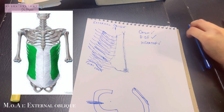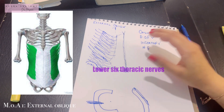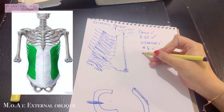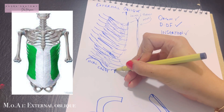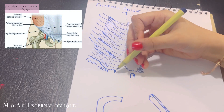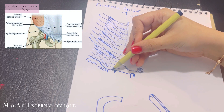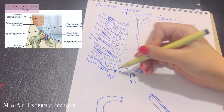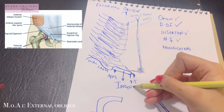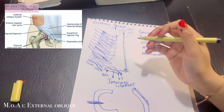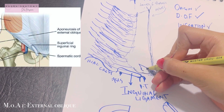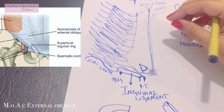The nerve supply of the external oblique is the lower six thoracic nerves. An important modification of this muscle is that between the anterior superior iliac spine and the pubic tubercle, the external oblique has a free inferior border. This free border folds upon itself to form the inguinal ligament — a very important ligament.